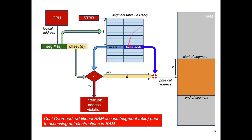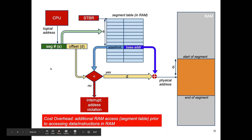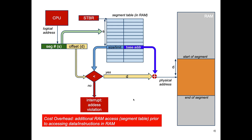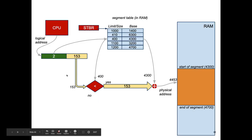Because the segment table is itself stored in RAM, every time the CPU fetches an instruction or data it must make at least two memory references: one to the segment table to get the limit and base, and a second to fetch the actual data or instruction. This doubles the overhead — if average RAM speed is 20 nanoseconds, the cost becomes 2 × 20 = 40 nanoseconds per access.